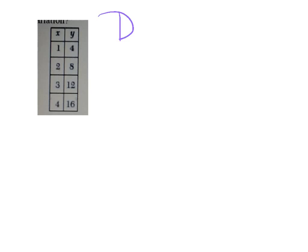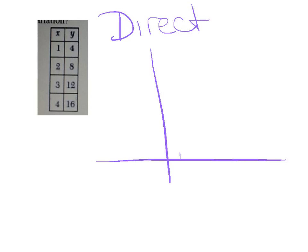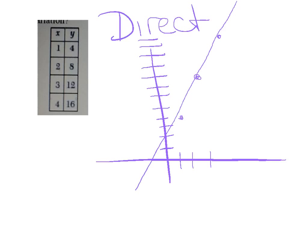Now I want to do one more thing with the direct variation example — I actually want to graph it out. Plotting the points (1,4), (2,8), (3,12) — you'll start to notice that these make a straight line. That's another quality of direct variation: it should make a straight line, with a constant slope of up 4 over 1. So another property of direct variation is that it should be linear.